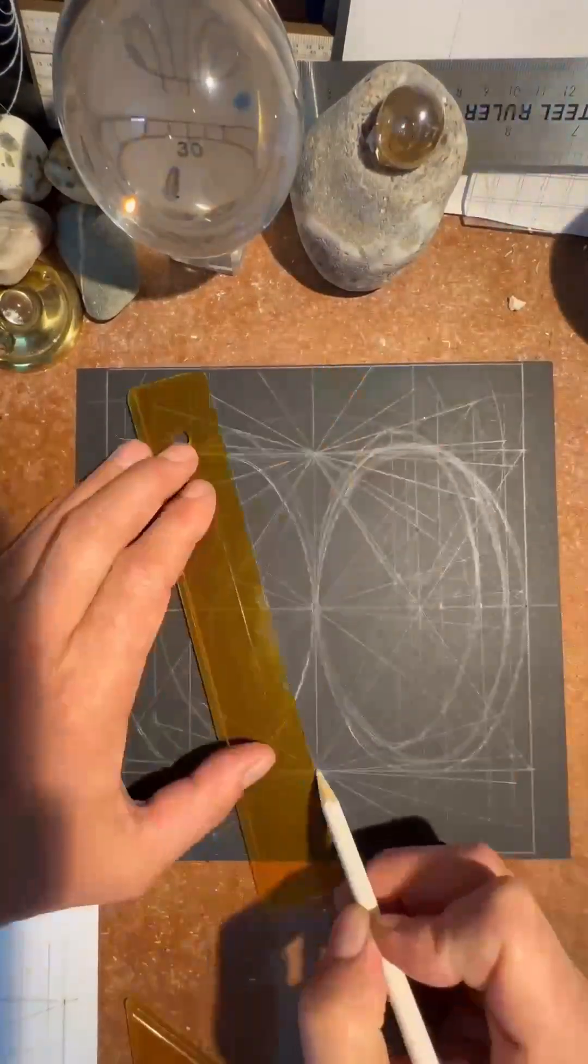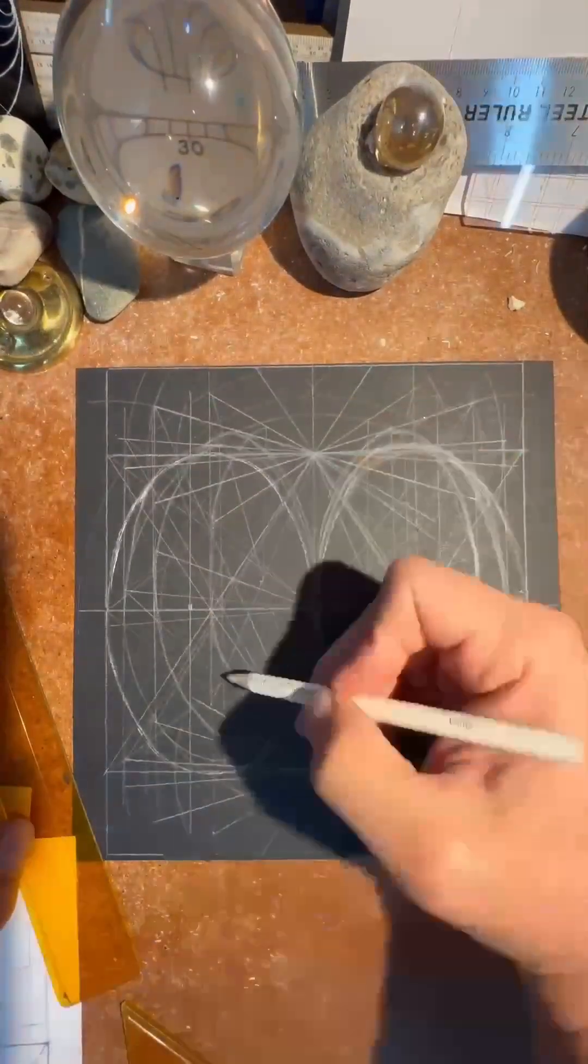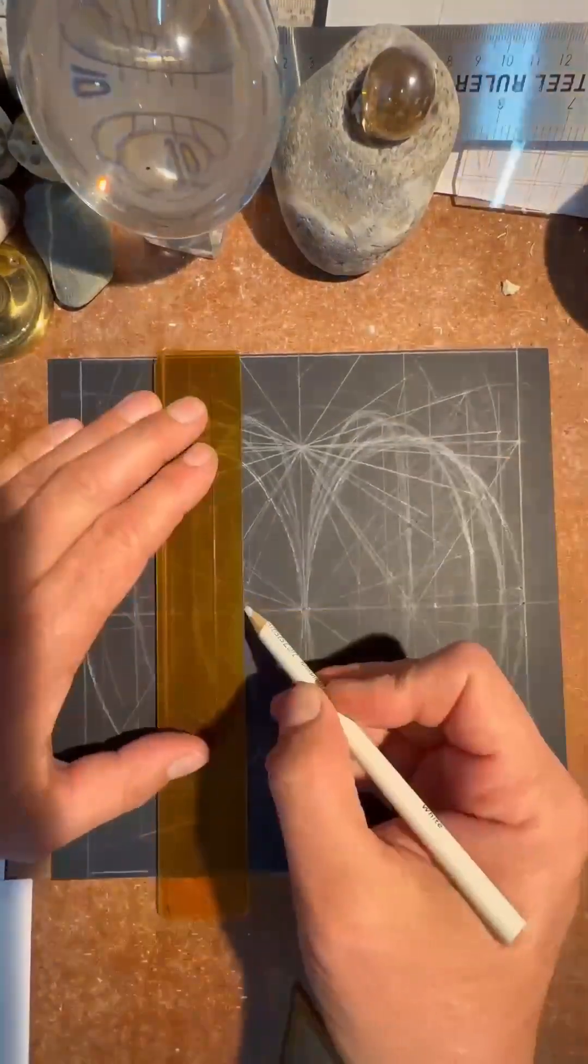Each box will radiate out from the center point above and below the center of the torus.